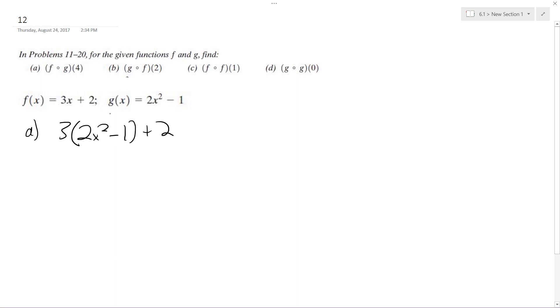And then we're going to plug in 4. So 3 times 2, wherever there's an x, times 4 squared minus 1 plus 2. So this becomes 3 times, this is 16, 4 squared, so that becomes times 2 is 32, minus 1 plus 2.